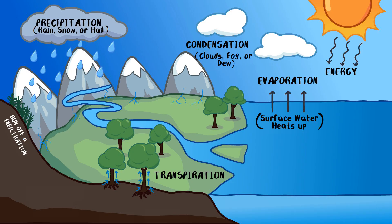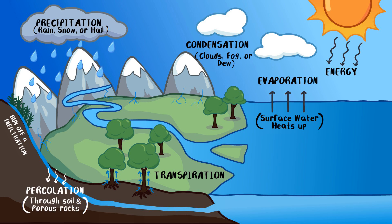Some infiltrated water continues moving downward in a process called percolation, where it filters through the soil and porous rock layers. Because water is a universal solvent, it dissolves minerals like calcium, sodium, and potassium along the way. Over time, this water collects in an aquifer, which is a natural underground storage of groundwater.